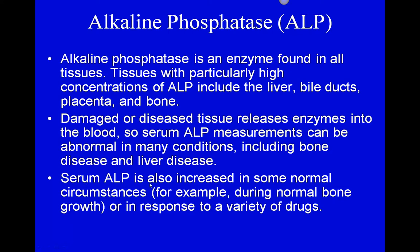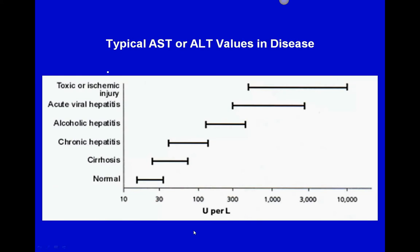Serum ALP is also increased during some normal conditions. As we said in our first lecture, some tests are influenced by time of day, sex, or geographic location. Going through puberty with lots of bone growth can cause ALP to elevate, and a number of drugs can also cause elevation. So we're not going to use one test alone to diagnose something - we combine tests to build a strong case. ALP elevates with liver damage, placenta present, or increased bone activity such as bone cancer or even just a growth spurt.